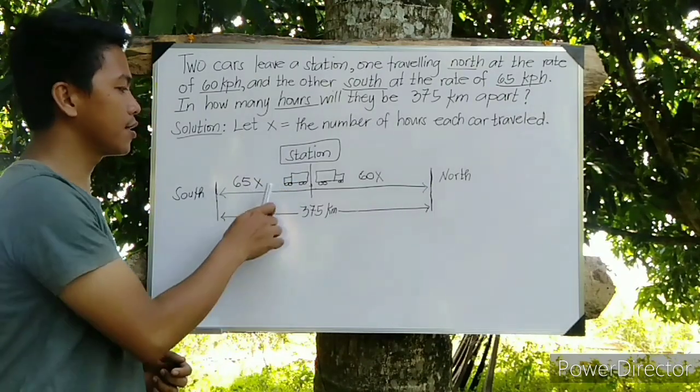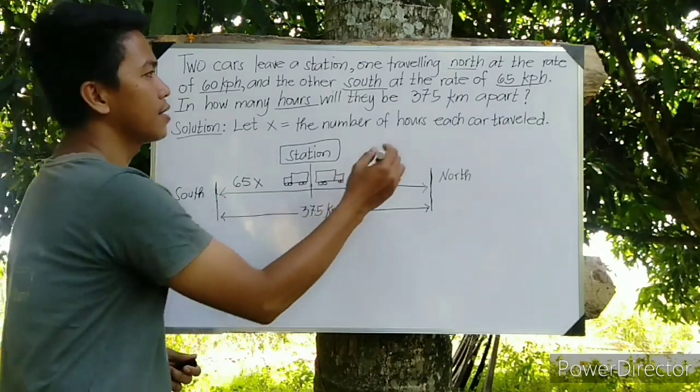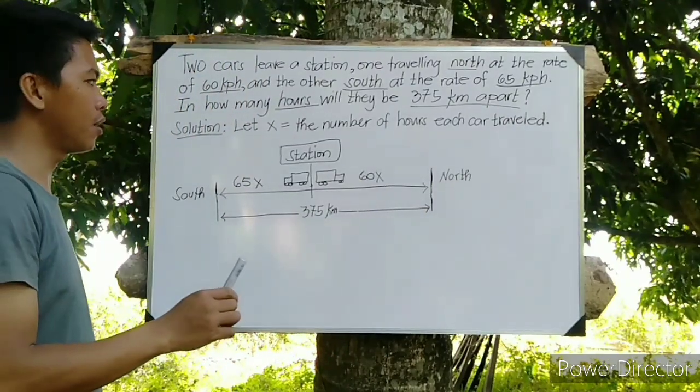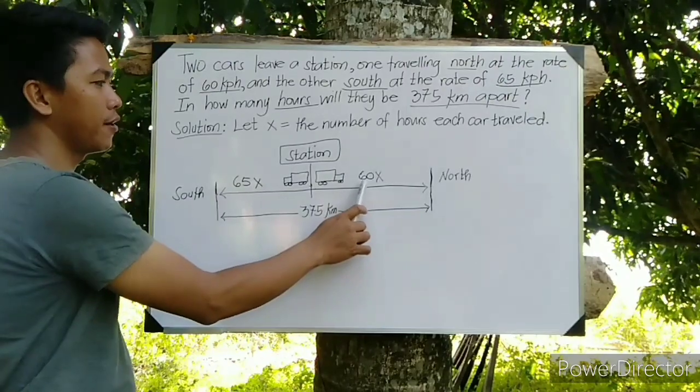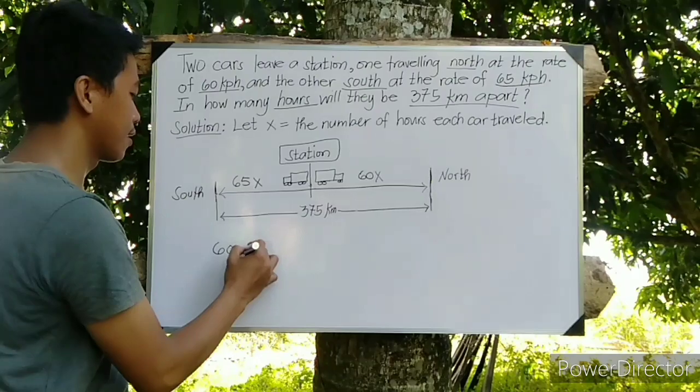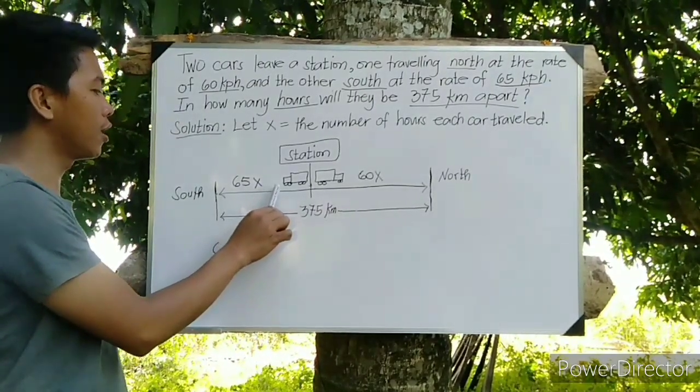For our equations, we have the distance traveled by the car going to the north, that is 60X, plus the distance traveled by the car going to the south, 65X, equals the total distance when they are apart, that is 375.